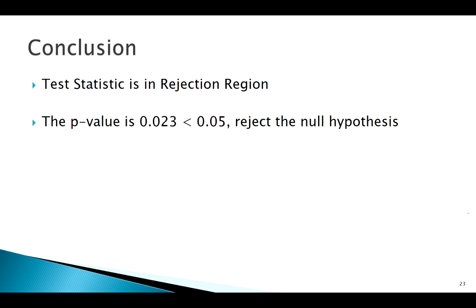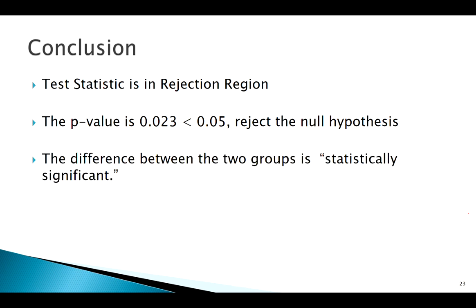So let's frame everything back in the context of our question. Our test statistic was in our rejection region. Our p-value is less than alpha. So we do see a statistically significant difference here. What does that mean? It means there's a difference in the curriculum. What exactly is that difference, though? We're not sure. Because remember, we just did a two-tailed test. So, there is a difference.